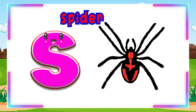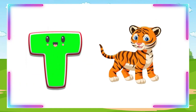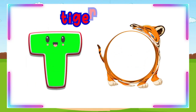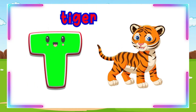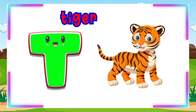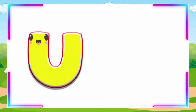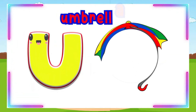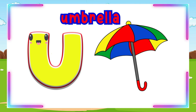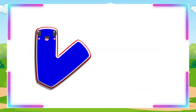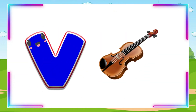T is for Tiger. T-Tiger, T-Tiger, T-Tiger. U is for Umbrella. U-Umbrella, U-Umbrella, U-Umbrella.